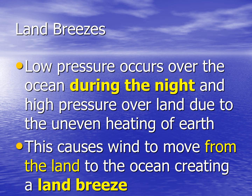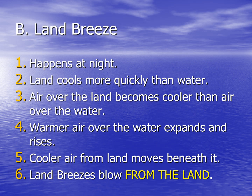A land breeze is when low pressure occurs over the ocean during the night, and high pressure over land, due to the uneven heating of the Earth's land mass. This causes air to move from the land to the ocean, creating a land breeze. A land breeze happens at night. Land cools more quickly than water. Air over the land becomes cooler, and the warmer air still sitting over the water expands and rises. Cooler air from land moves beneath it. Land breezes blow from the land to the large body of water.